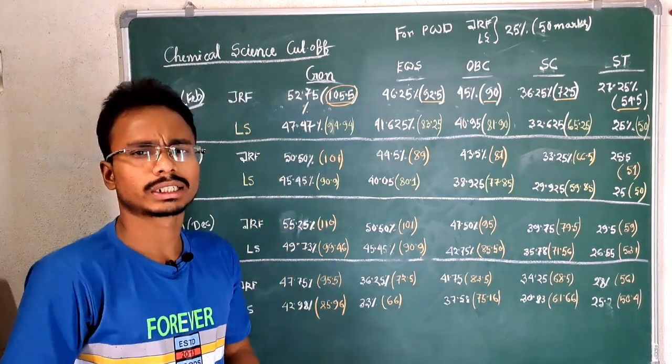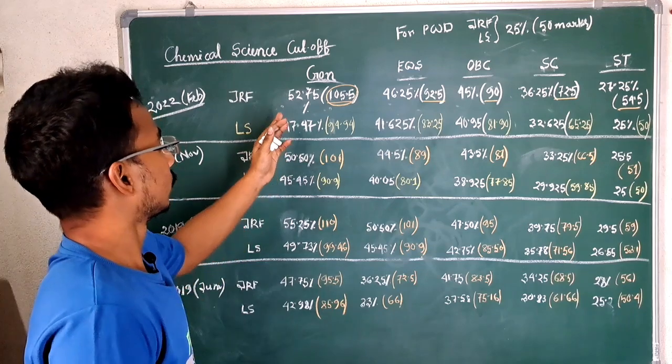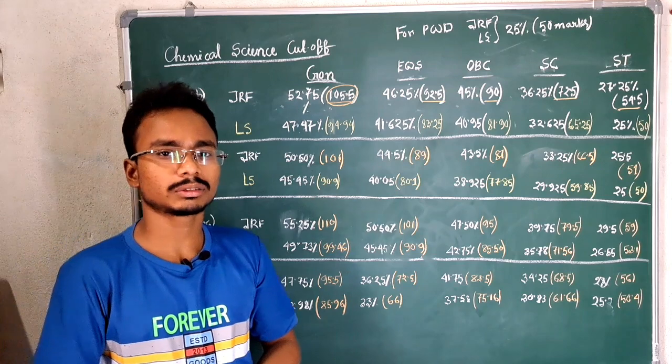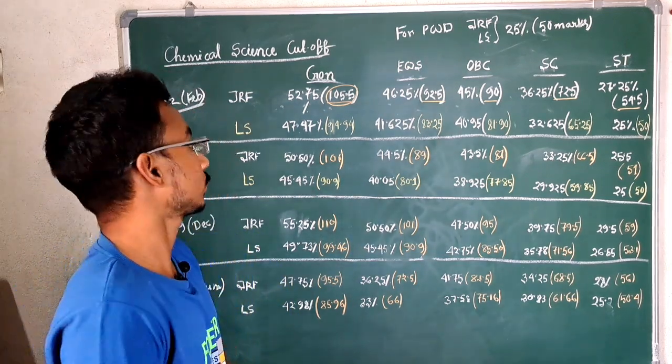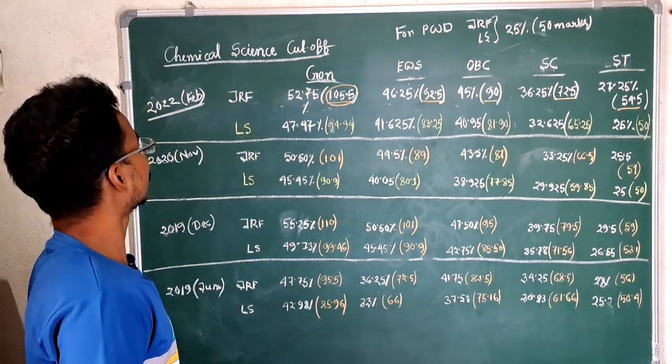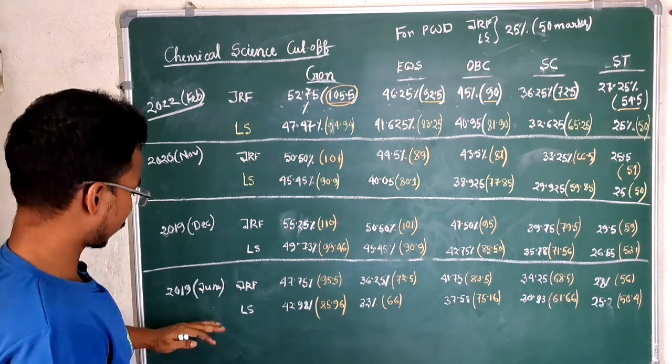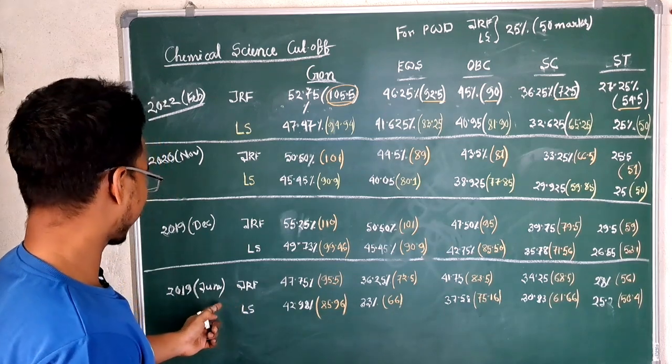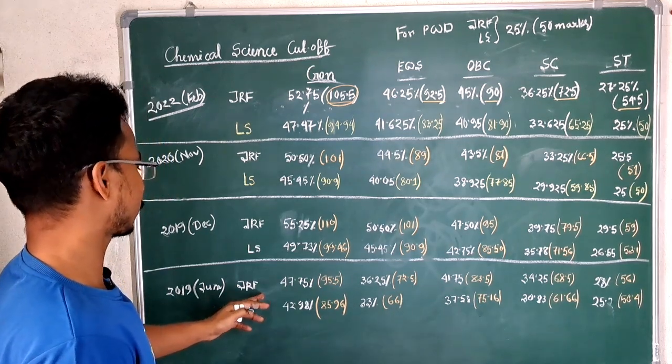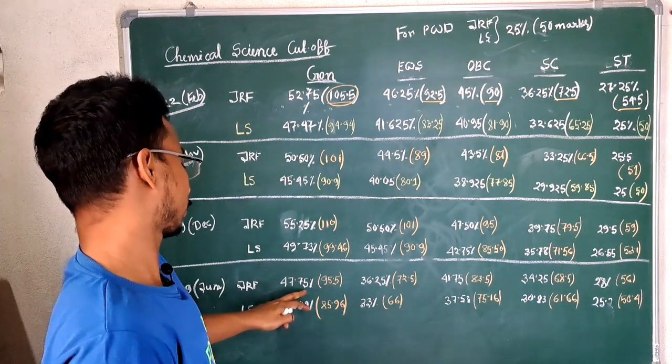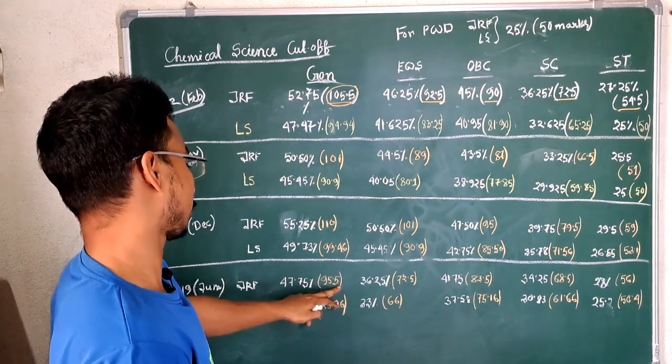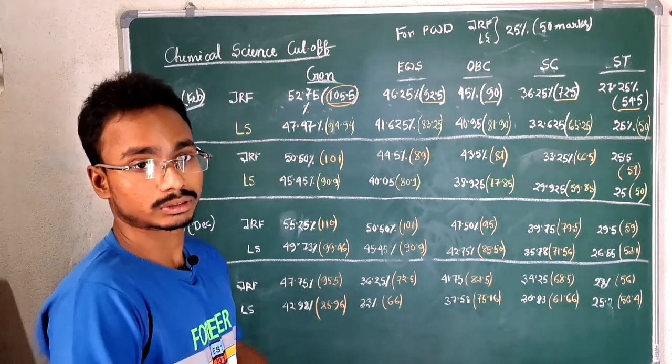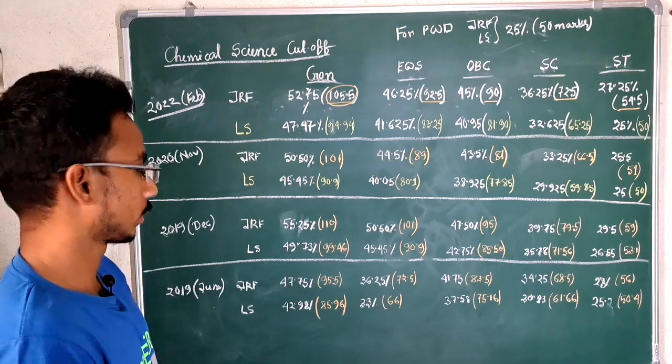And at the end of the video, we will show some expected cutoff or we will guess. We can't say exactly, but we can guess the cutoff. So as you can see, we will start from the 2019 June. The JRF cutoff for general is 47.75 percent, that is 95.5. That is below 100 means I think that question was tough that 2019 June year.